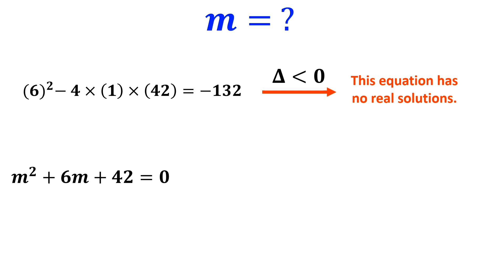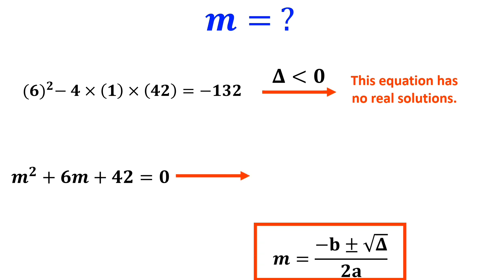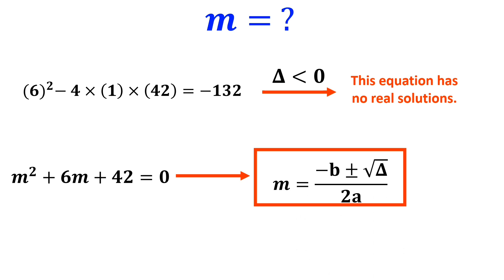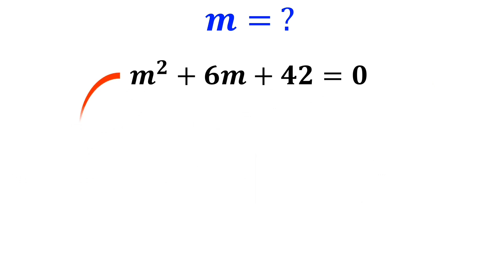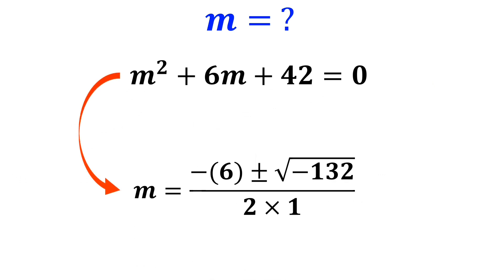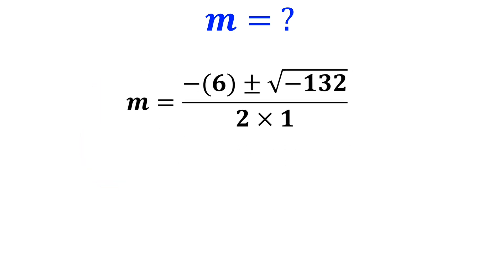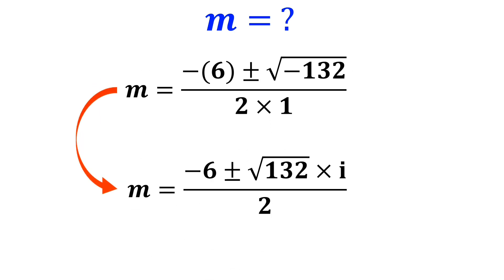So we need to look for complex solutions. The value of m is found using the formula m equals negative b plus or minus the square root of delta, divided by 2a. So the value of m for this equation is negative 6 plus or minus the square root of negative 132, divided by 2 times 1, which simplifies to negative 6 plus or minus the square root of 132 times i, over 2.